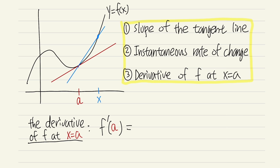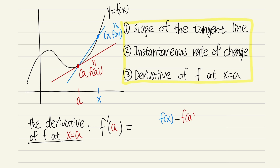Now let's find the slope of the line connecting the two points. It's just y2 minus y1 over x2 minus x1. For y2, here is the x value — you put that into the function, so this point is x comma f of x, meaning y2 is f of x. Then minus y1: that point is a, and you plug it into the function to get f of a, which is our y1.